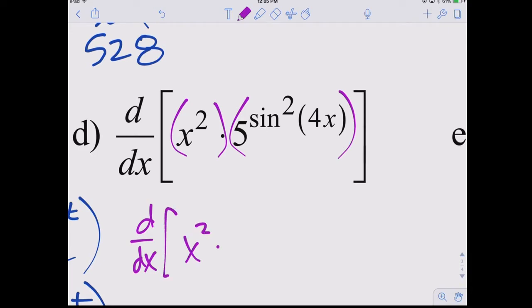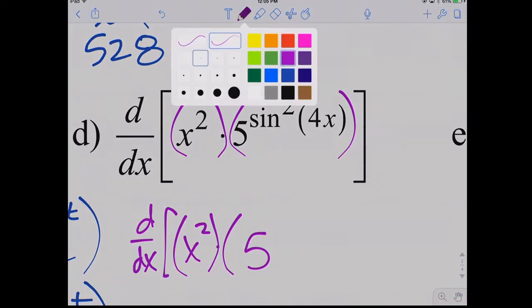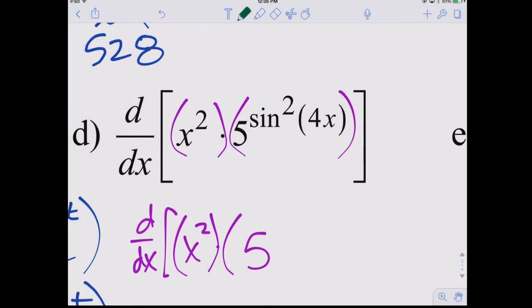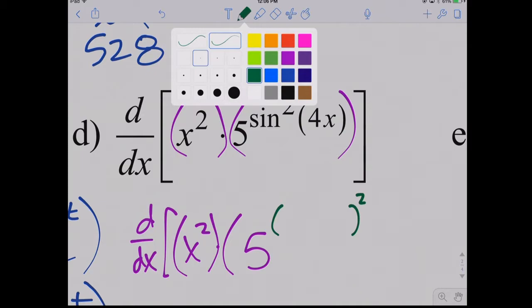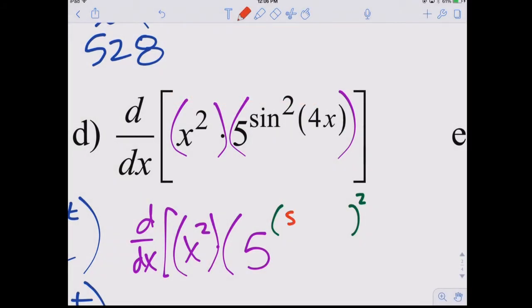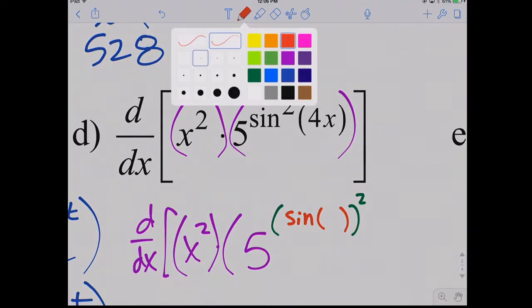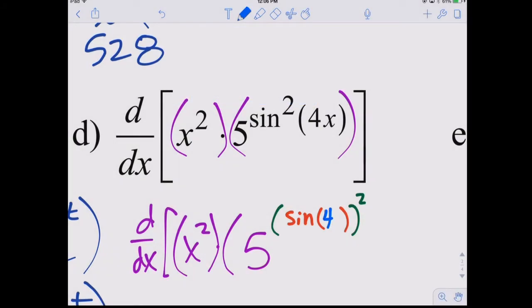So what I'm going to do first, before I take the derivative, is just rewrite it because I can see several layers on that one. It's 5 to the, and what would be the next layer? 5 is the outer layer, the exponential piece, but then it's blob squared, right? That's the next layer. And then inside there, you have the sine layer, and then the innermost layer would be, let's see, let's use blue, would be 4x.